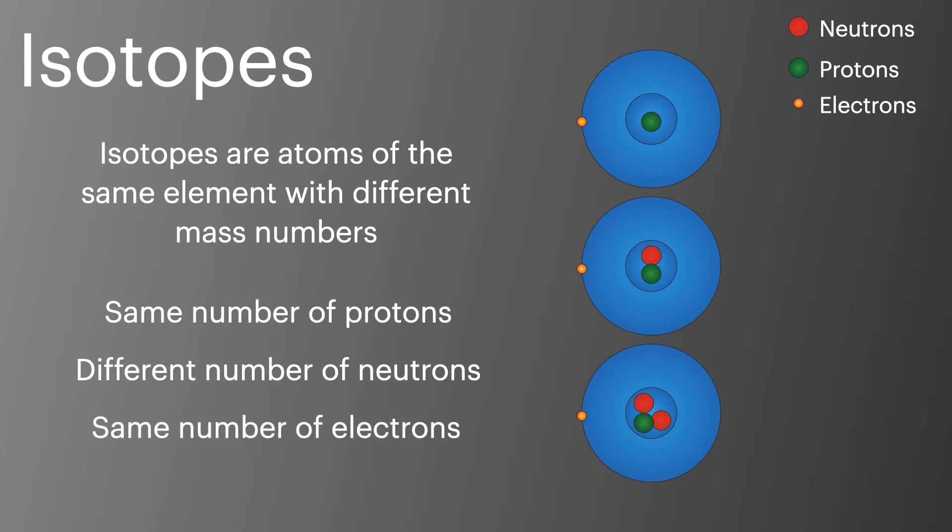Isotopes of an element all have the same number of electrons. This means that isotopes have the same chemical properties as each other, as it's the number and position of electrons which influence the chemical reactions.